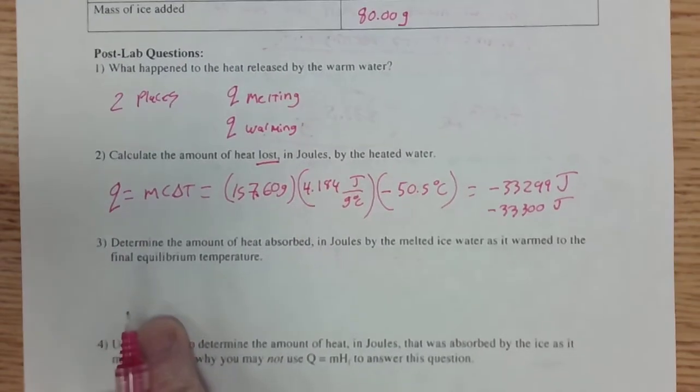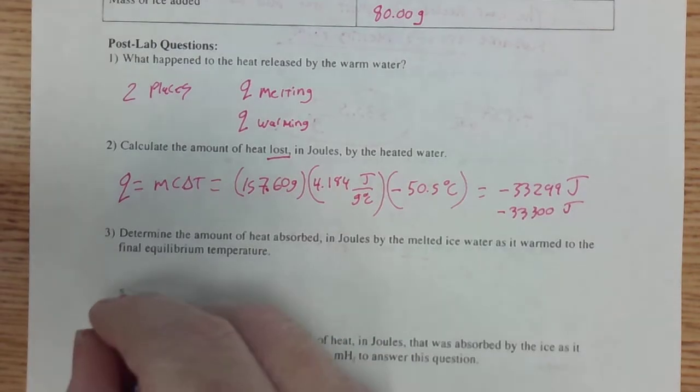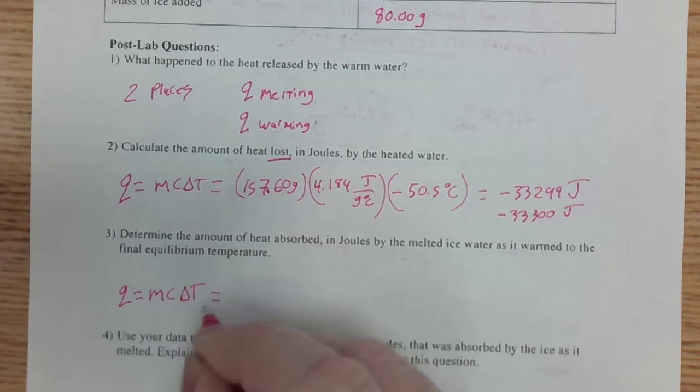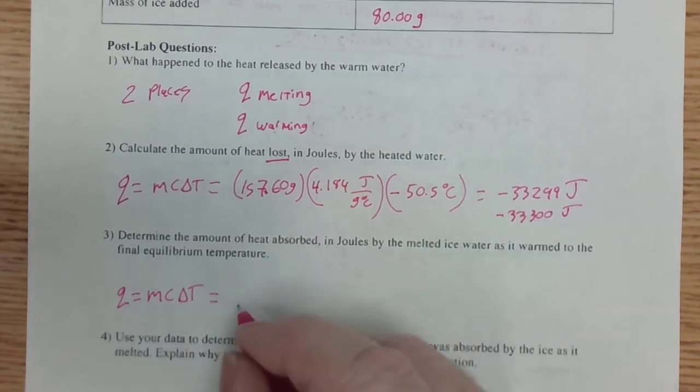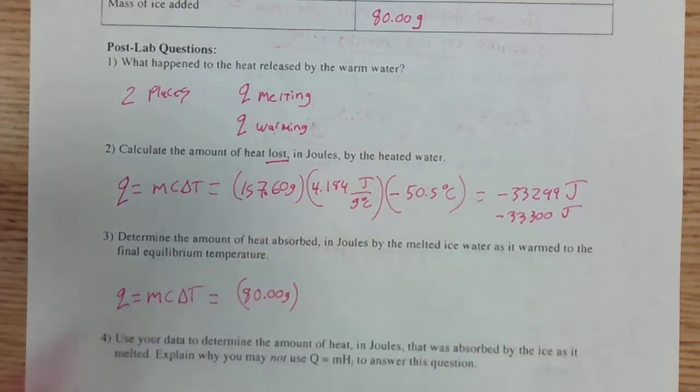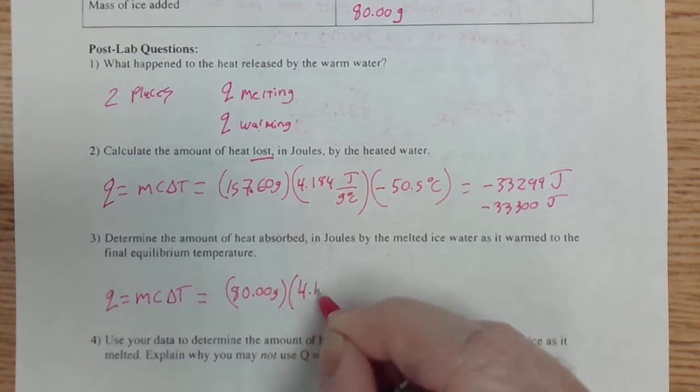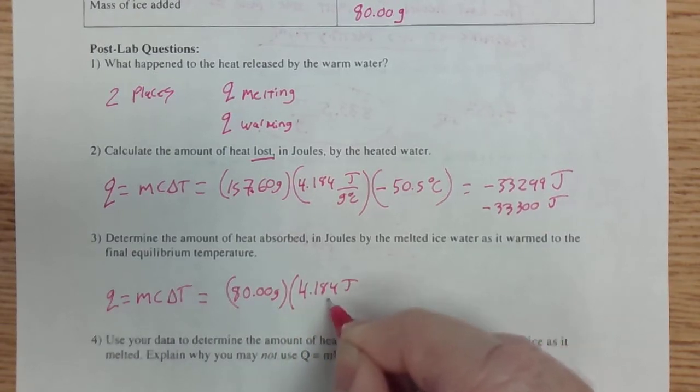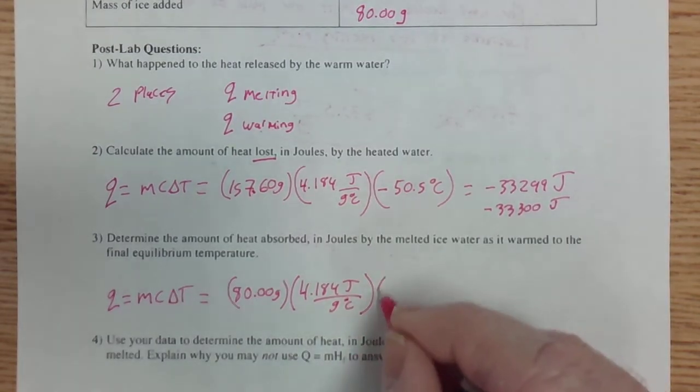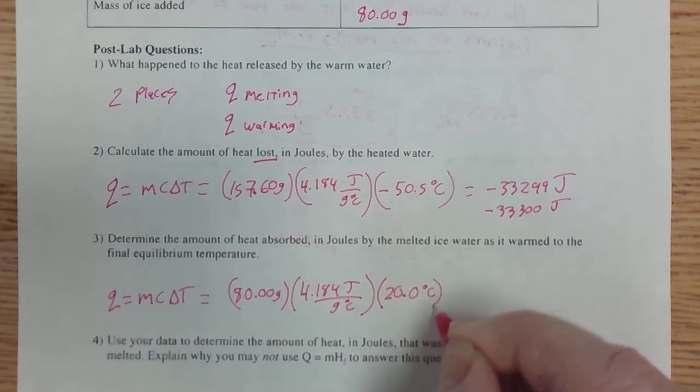Now, how about the amount of heat absorbed in joules by the melted ice water? That's also Q equals MC delta T. We're just changing out some numbers. The mass of the ice water was 80 grams. That's the mass of the ice that was added. We're still multiplying by 4.184 joules per gram degree Celsius. That's the heat capacity for liquid water. And it underwent a temperature change of 20.0 degrees Celsius.